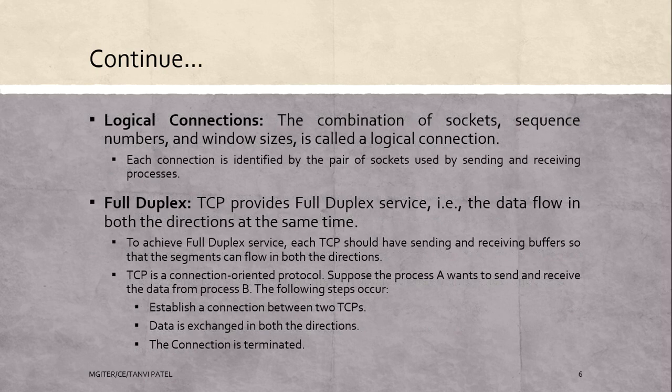Next is logical connections. This is a feature of TCP. The combination of sockets, sequence numbers, and window sizes is called a logical connection. Each connection is identified by the pair of sockets used by the sending and receiving processes.